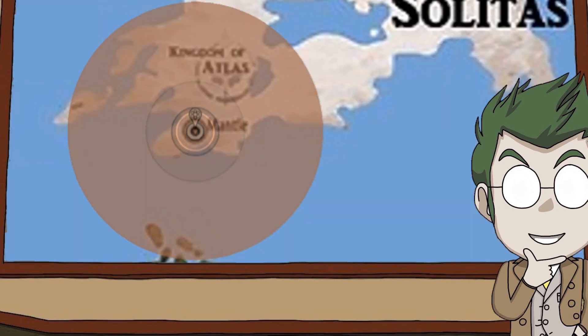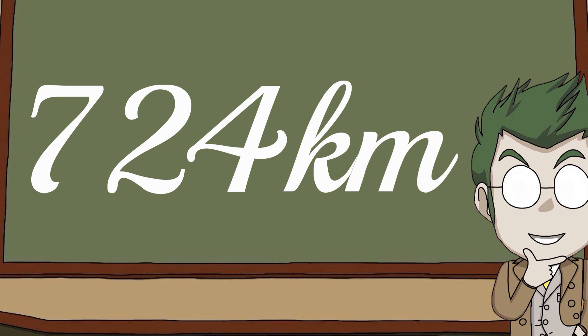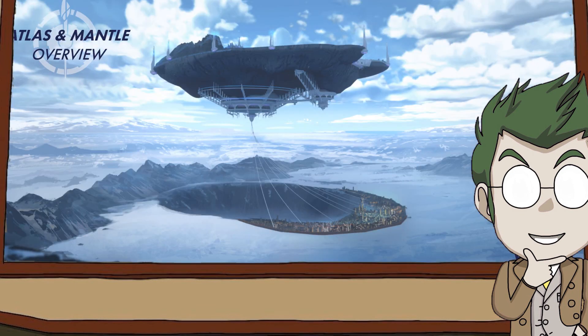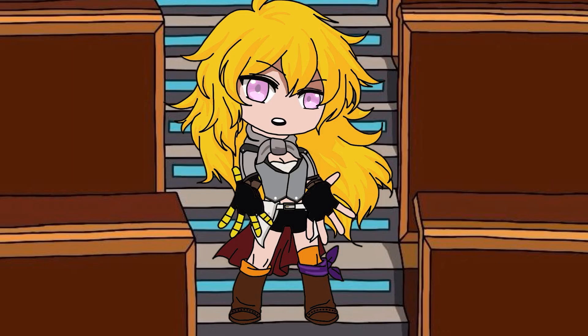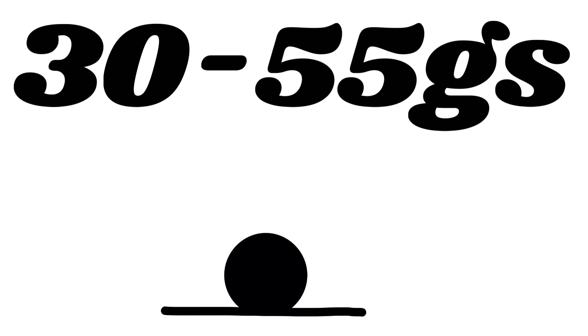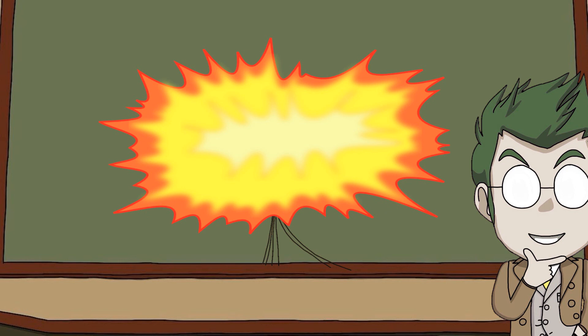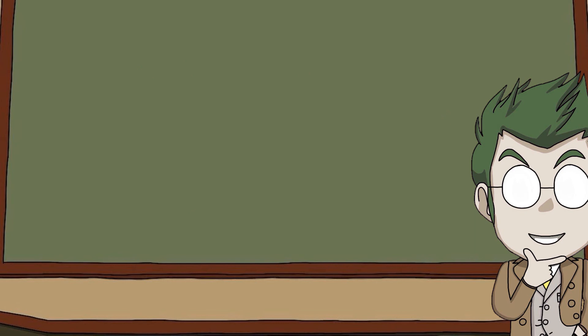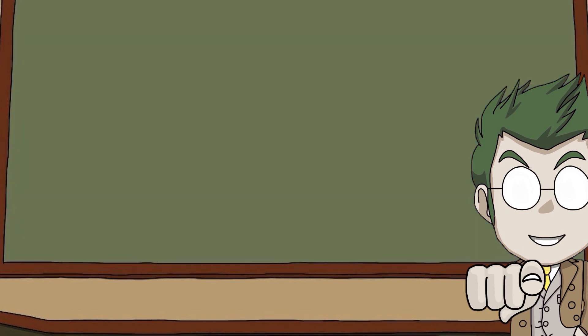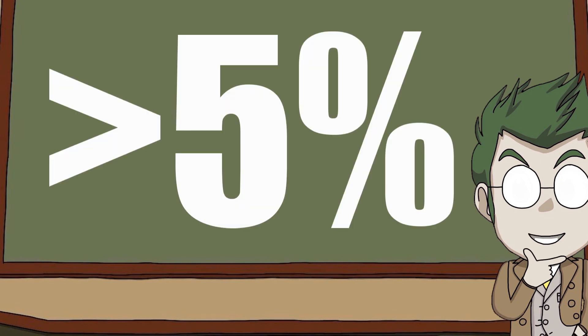But what about everyone on Atlas? Well, if you were too close to the edge, you'd probably be blown off — if you were lucky. Otherwise you may be burned alive. But any unfortunate soul still on Atlas when it hits the ground may be killed by deceleration, experiencing between 30 and 55 G's of force on their body. That's assuming Atlas doesn't explode into millions of pieces, which would probably increase the number to 80 to 90 G's. Assuming you were on Atlas or Mantle without an airship, your chances of survival are less than five percent.